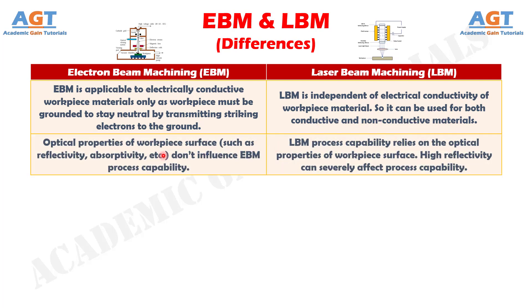Difference number 7: Optical properties of the workpiece surface, such as reflectivity and absorptivity, do not influence electron beam machining process capability, whereas laser beam machining process capability relies on the optical properties of the workpiece surface. High reflectivity can severely affect process capability.